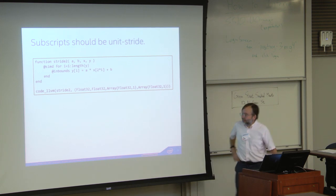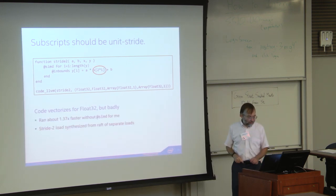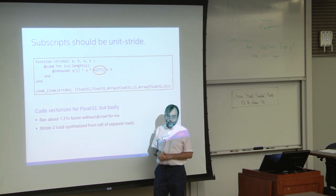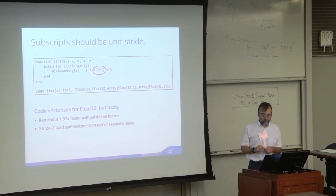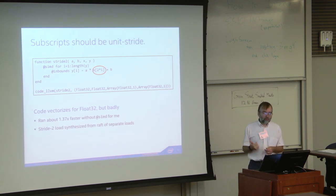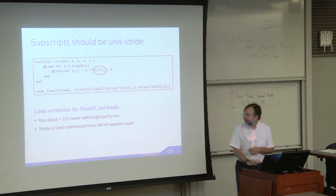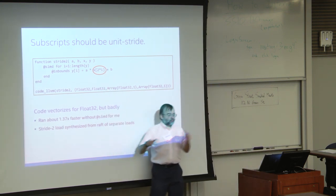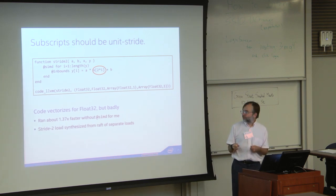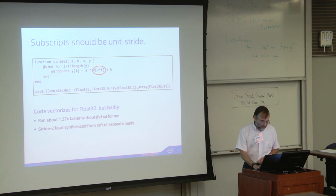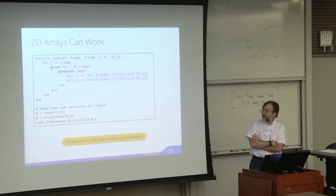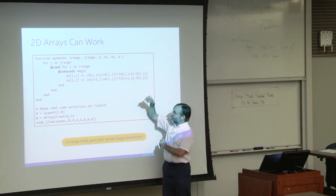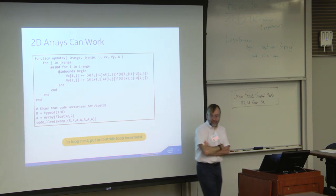Subscripts have to have unit stride. Here's an example without unit stride — there's a non-unit stride subscript: 2*i. The compiler can deal with it somewhat, but badly, because the underlying hardware doesn't have an instruction to deal with it. This example actually vectorizes, but runs slower than if you didn't vectorize it — it synthesizes the stride-two load from a whole bunch of scalar loads. For 2D arrays, you just have to be careful to make sure your inner loop is the one marked @simd and it has the unit stride. Since Julia is column-major, you want the leading subscript on the inner loop to be vectorized.